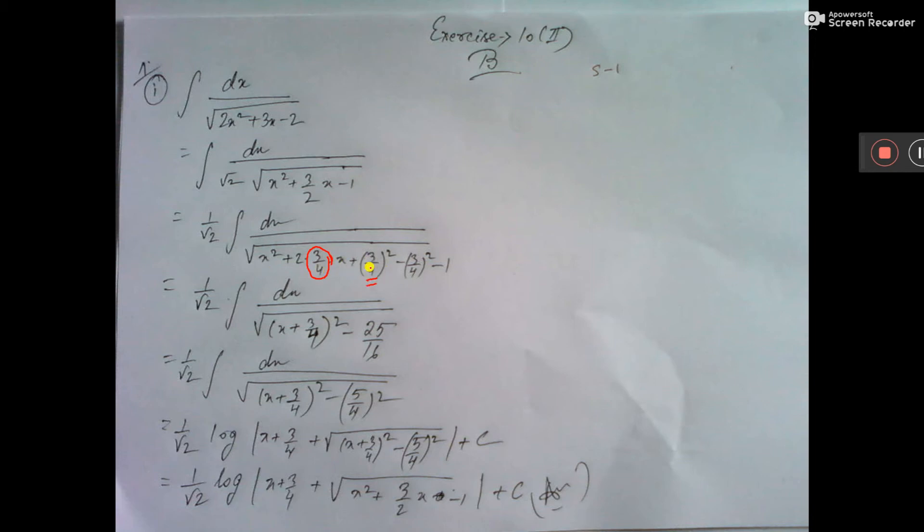Now this one we cannot take if we do not subtract this, because it was not there. And minus 1 was there, written here. Now see, a squared plus 2ab plus b squared, that is a plus b whole squared.